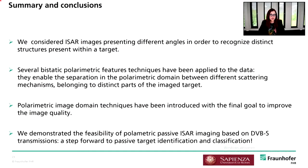In summary: we considered ISAR images from different angles to recognize distinct structures within the target. We applied different bistatic polarimetric feature techniques to separate, in the polarimetric domain, different scattering mechanisms within the imaged target. For low-SNR images, we applied image domain techniques to obtain a single image with higher quality. We demonstrated the feasibility of polarimetric passive ISAR imaging based on DVB-S transmission, making a step forward toward passive target identification and classification.